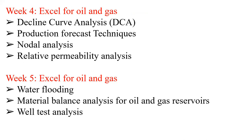For week four, we are going to use Excel for oil and gas — how to carry out decline curve analysis to do production forecasting. We will look at nodal analysis, developing vertical lift performance curves, IPR (inflow performance relation) curves using Excel, and relative permeability analysis. For week five, we continue with Excel for oil and gas: water flooding material balance analysis, and well testing such as pressure transient analysis using Cypher. We can also use Excel for some of the analysis.